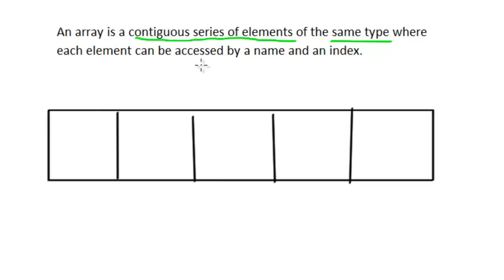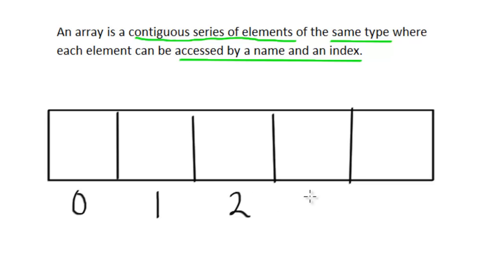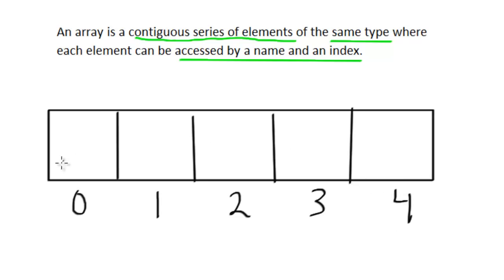The last part of the definition is that an array can be accessed by a name and an index. Each element has a position: the first element is at index zero, then one, two, three, and four. With a five-element array, the very last element has an index of four — always one less than the size or length of the array. The length is simply how many elements we have.